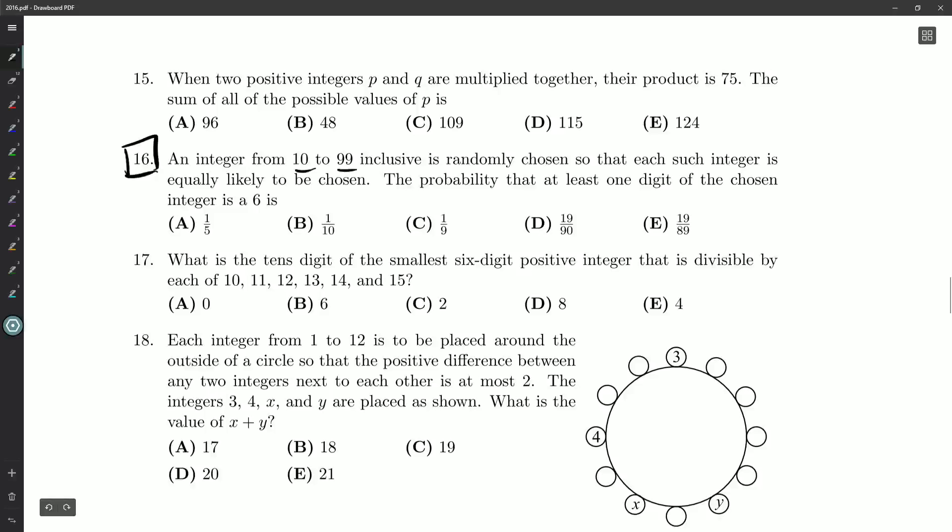An integer from 10 to 99 inclusive, so including these endpoints, is randomly chosen so that each such integer is equally likely to be chosen. This is something a fancier mathematician might call an equiprobable sample space. The probability that at least one digit of the chosen integer is 6 is.